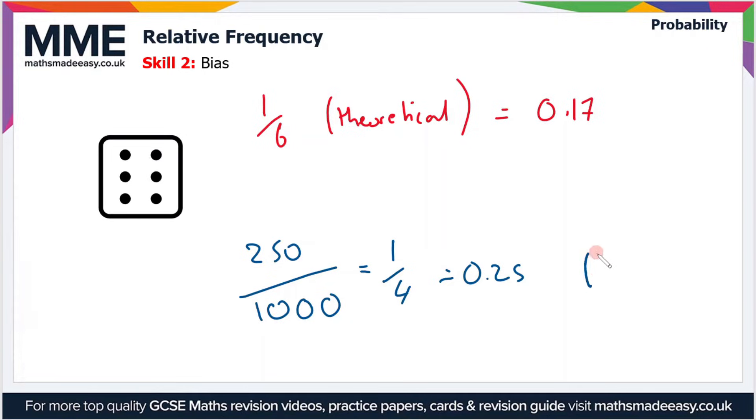So what we can say is that our relative frequency is much higher than our theoretical probability, so therefore the dice is likely to be biased towards rolling a six.